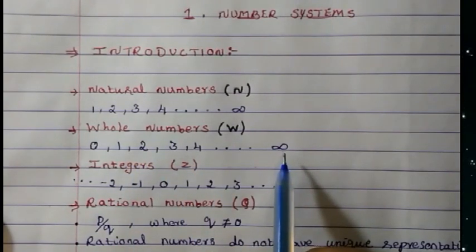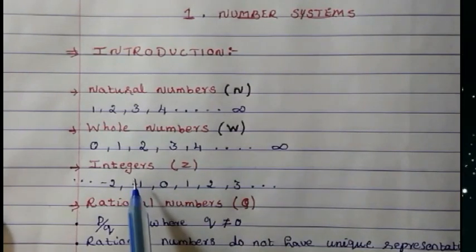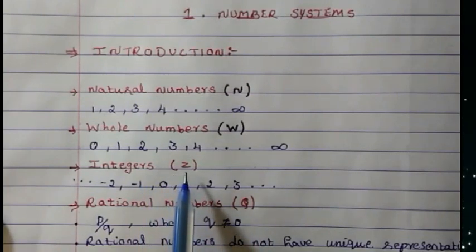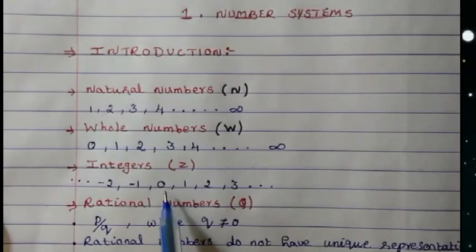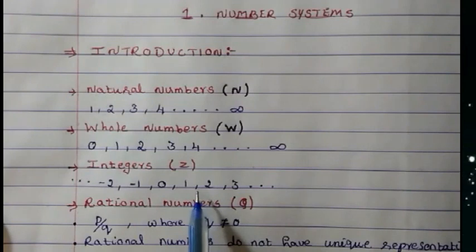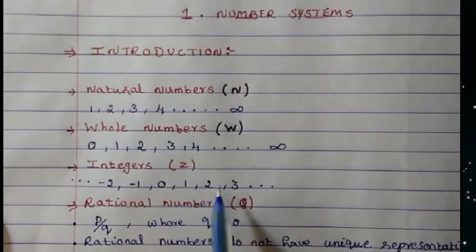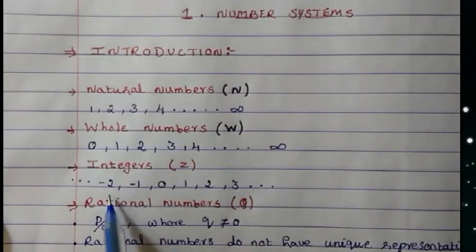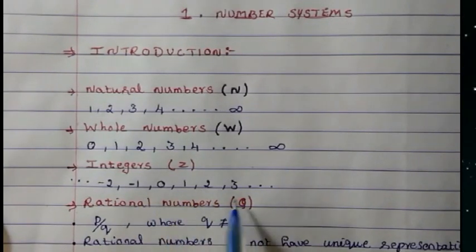Meaning not ending. Then comes integers, which are also denoted by Z. Integers include all counting numbers — all positive numbers and negative numbers including 0. To the right side you have positive numbers, and to the left you have minus 1, minus 2 and so on. So these whole set of numbers are called integers.